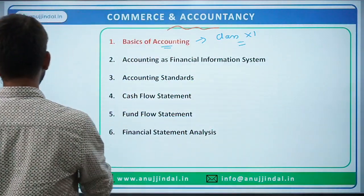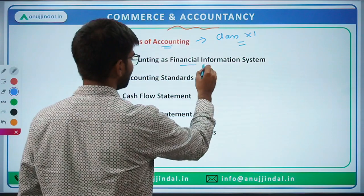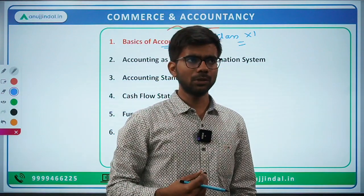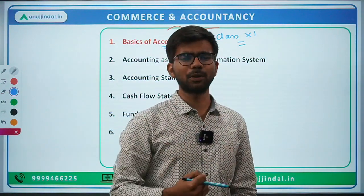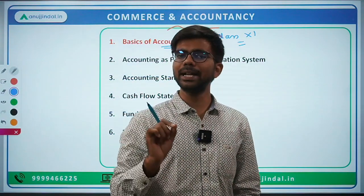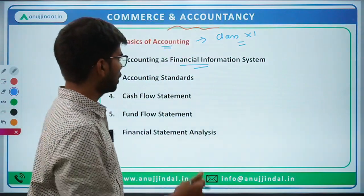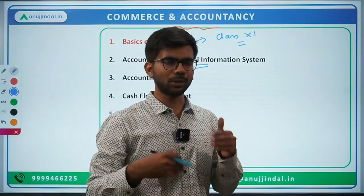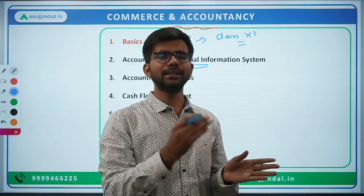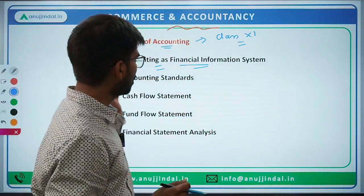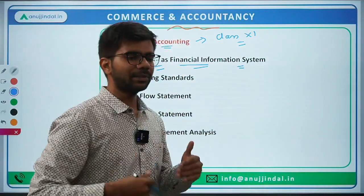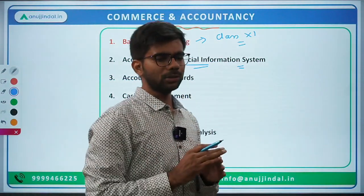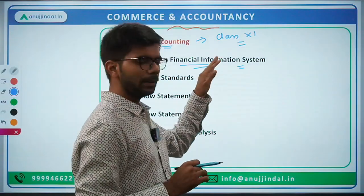You must know those basics of accounting topics. Then there is accounting as a financial information system. Accounting provides utility in the form of information to both internal and external users. As a process, there is input in the form of raw data, then processing on the basis of rules of accounting, and then output in the form of financial statements. There are also certain qualitative characteristics of accounting information — like it should be relevant and reliable — which also come under accounting as a financial information system.